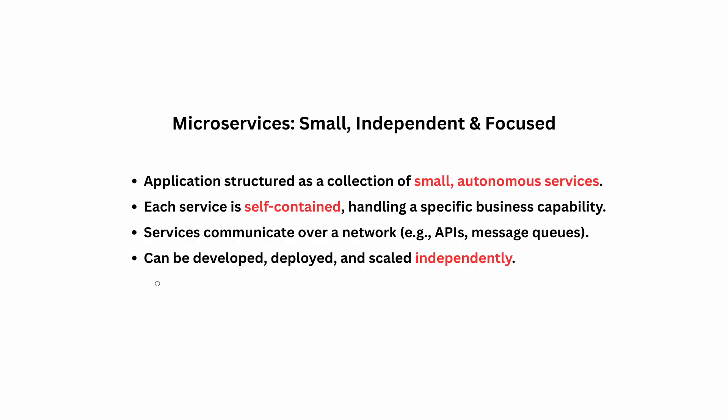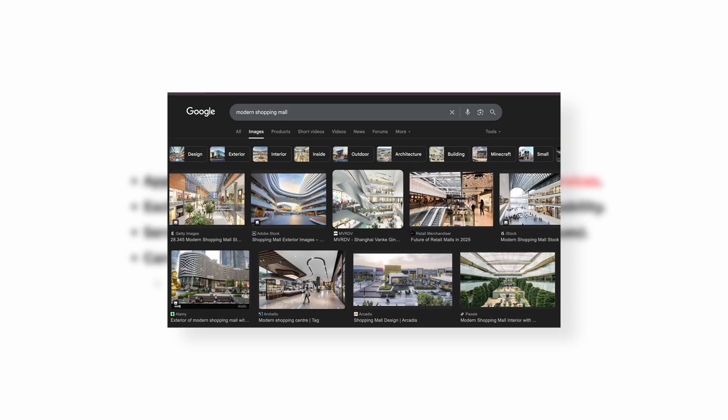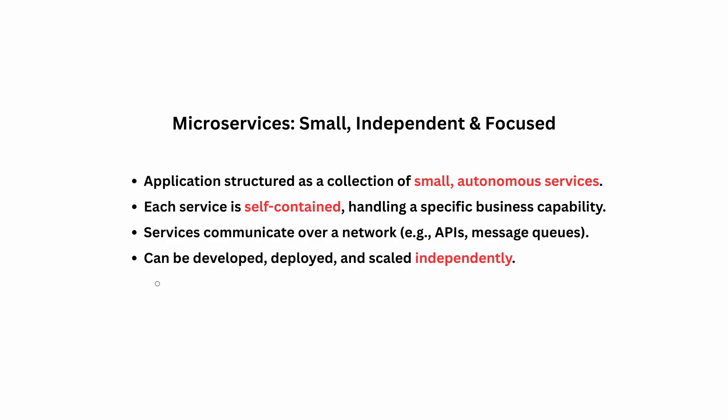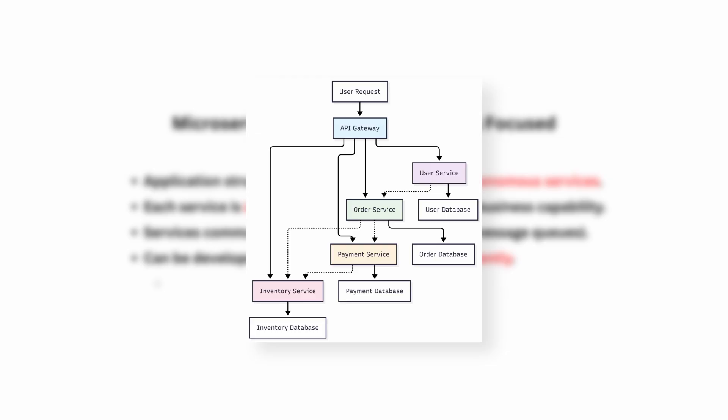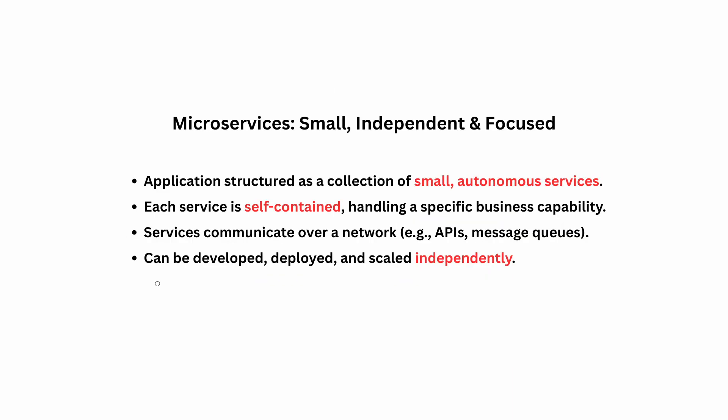Let's come to microservices. Think of this like a modern shopping mall — instead of one giant department store, you have many smaller specialized stores: a store for shoes, for books, for tech, and several restaurants, each operating independently but overall contributing to the experience of the mall. In software terms, a microservice architecture breaks down a large application into a collection of smaller independent services. Each service is responsible for a specific business function — like a user service, a product service, an order service — and they communicate with each other usually over a network using APIs.